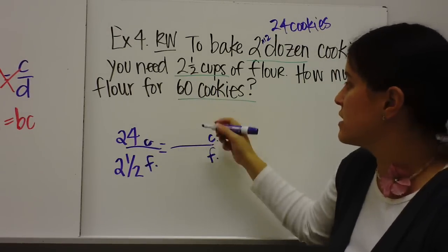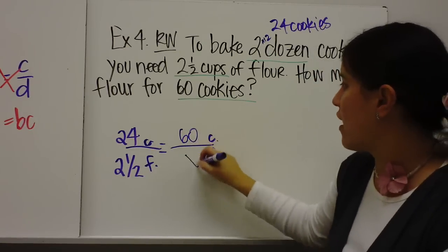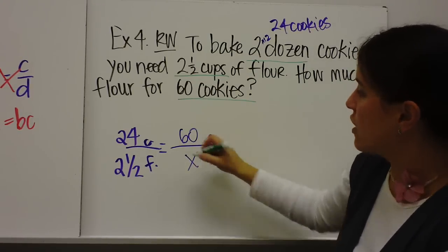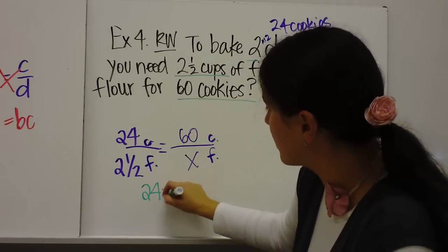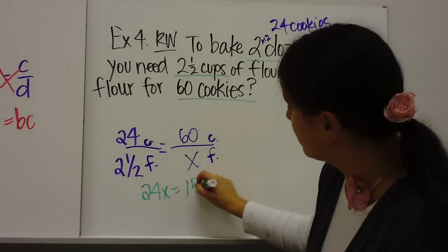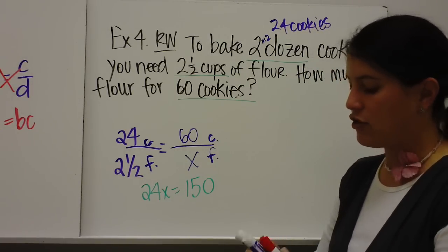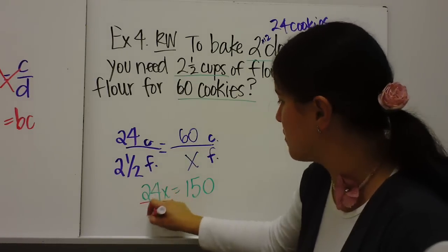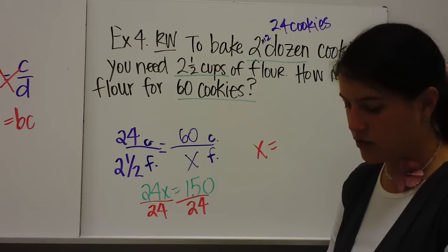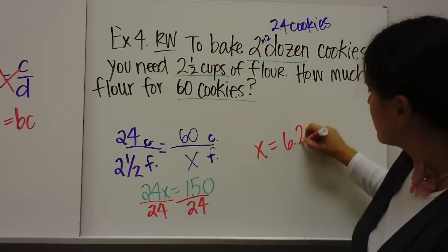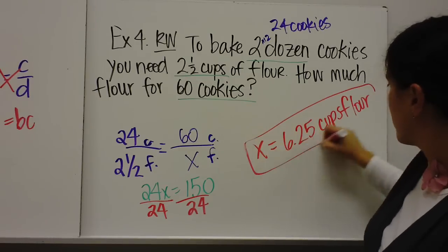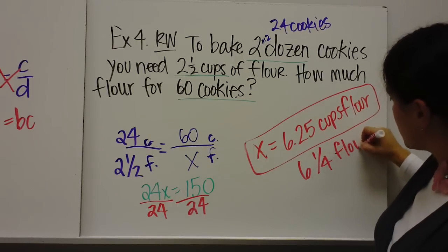How much flour for 60 cookies? So 60 cookies would go on top. And flour would go on bottom. The x doesn't always go on the bottom. That's just where it's gone. So you're going to cross multiply. And we get 24x equals two and a half times 60, 150. And then you're going to divide both sides by 24. So 150 divided by 24. So you're going to need 6.25 cups of flour, or six and a quarter cup of flour.